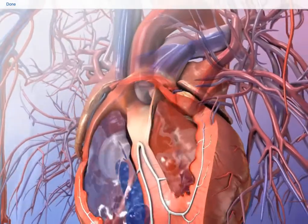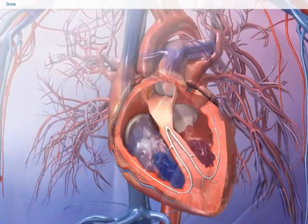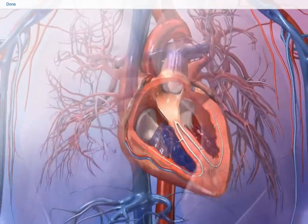Each of the four valves is composed of flaps called leaflets or cusps which prevent backflow of blood in the wrong direction.